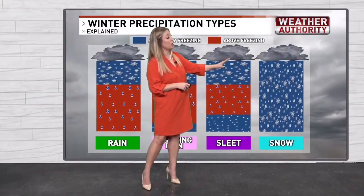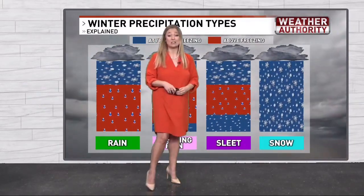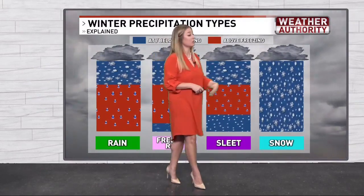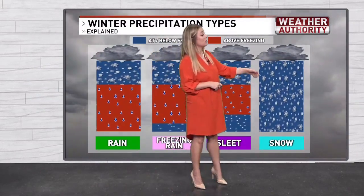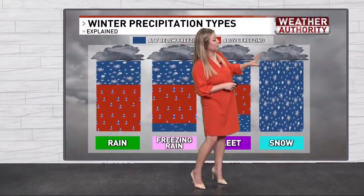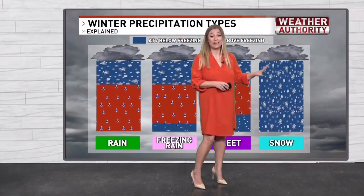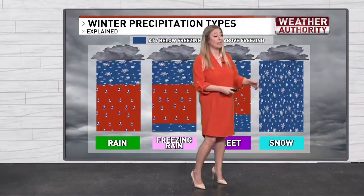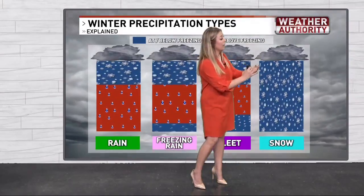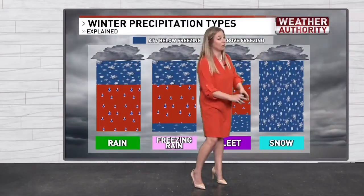Finally, we have snow. This is the easiest one to determine. There's not a change in temperature warmer than freezing from the cloud base all the way to the ground, so those flakes are able to make it to the ground.